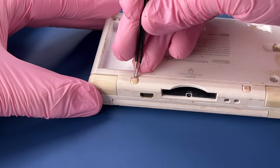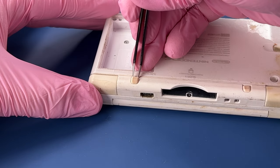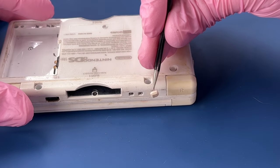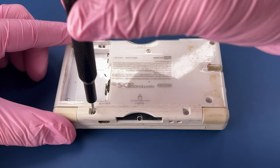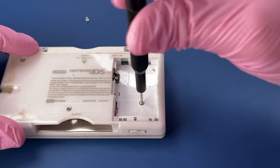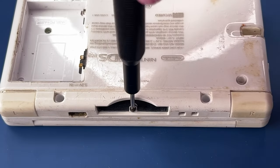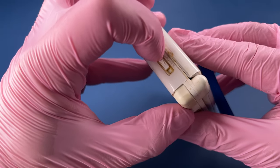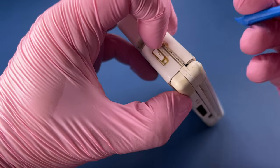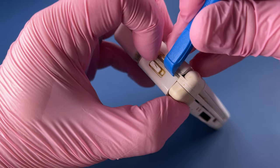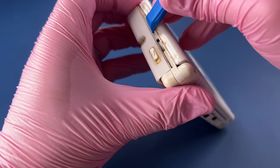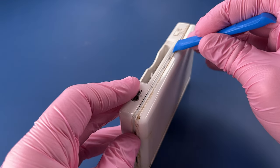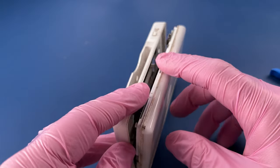Battery looks good. I'm going to use my pry tool to put right here in this gap and then run it along and we should be able to separate the bottom part of the case that way. There we go.